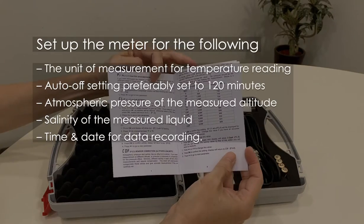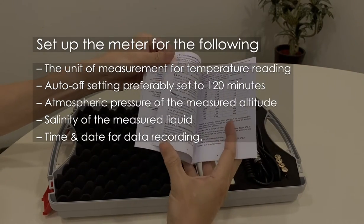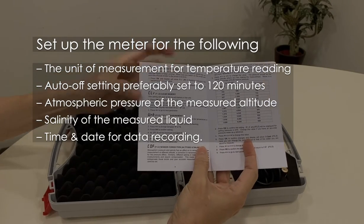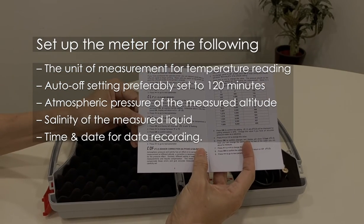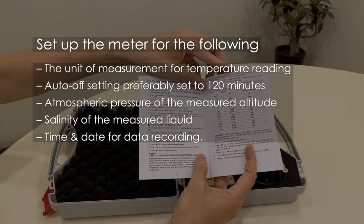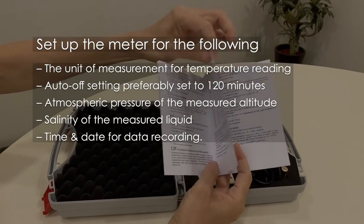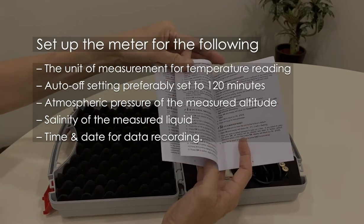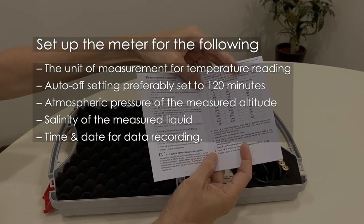Set up the meter for the following: the unit of measurement for temperature reading, auto-off setting preferably set to 120 minutes, atmospheric pressure of the measured altitude, salinity of the measured liquid, and time and date for data recording.